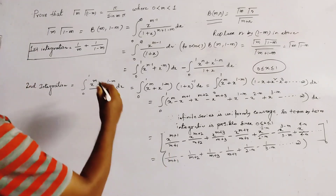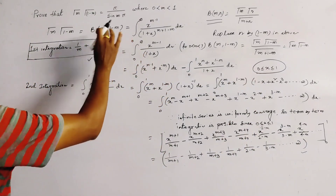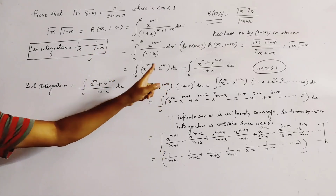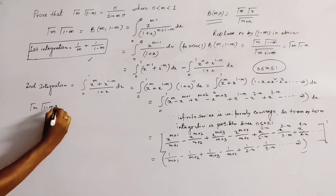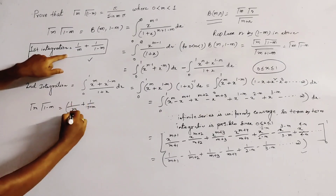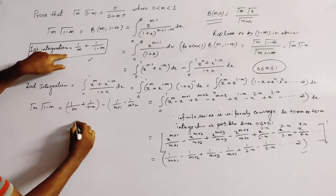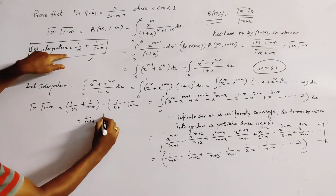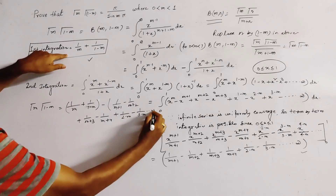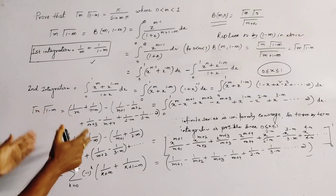Now we substitute the values of both integrals to find Γ(m)·Γ(1-m) = β(m, 1-m). The first integral gives 1/m + 1/(1-m), and subtracting the second integral gives: 1/m + 1/(1-m) - [1/(m+1) - 1/(m+2) + 1/(m+3) - 1/(m+4) + ... + 1/(2-m) - 1/(3-m) + ...]. Now we arrange all these terms.